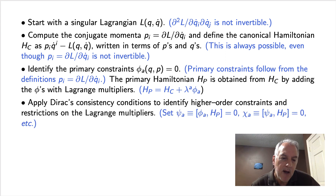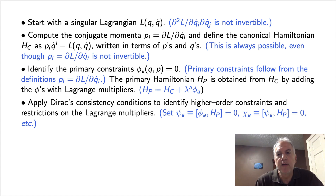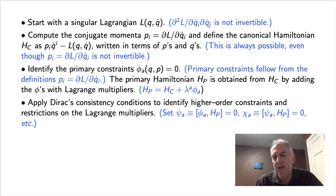Next, we apply Dirac's consistency conditions to identify higher-order constraints and restrictions on the Lagrange multipliers. We do this by computing the time derivatives of the primary constraints using the primary Hamiltonian and Poisson brackets. Setting those results to zero can lead to further restrictions on the p's and q's — those are the secondary constraints — or they can restrict the Lagrange multipliers. We then apply the consistency conditions to the secondary constraints to identify tertiary constraints, and so forth.